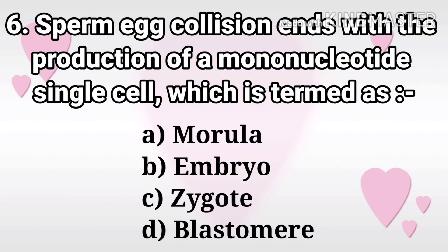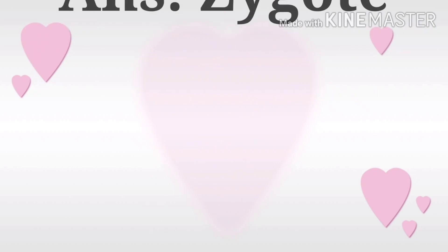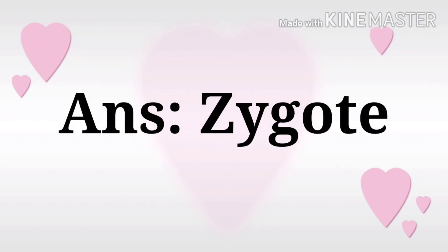Next question: Sperm-egg collision ends with the production of a mononucleate single cell, which is termed as? The options are morula, embryo, zygote, and blastomere. The answer is zygote.